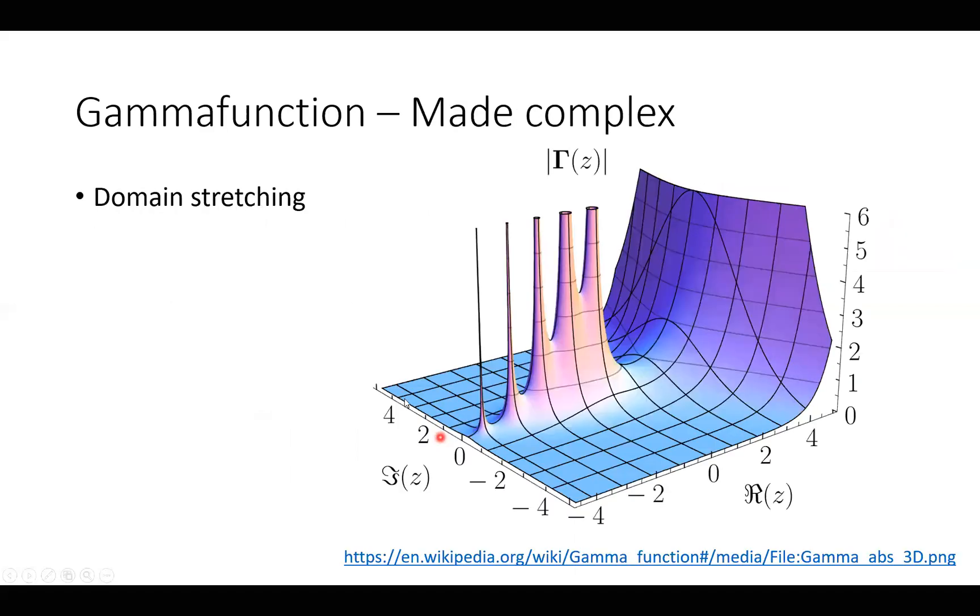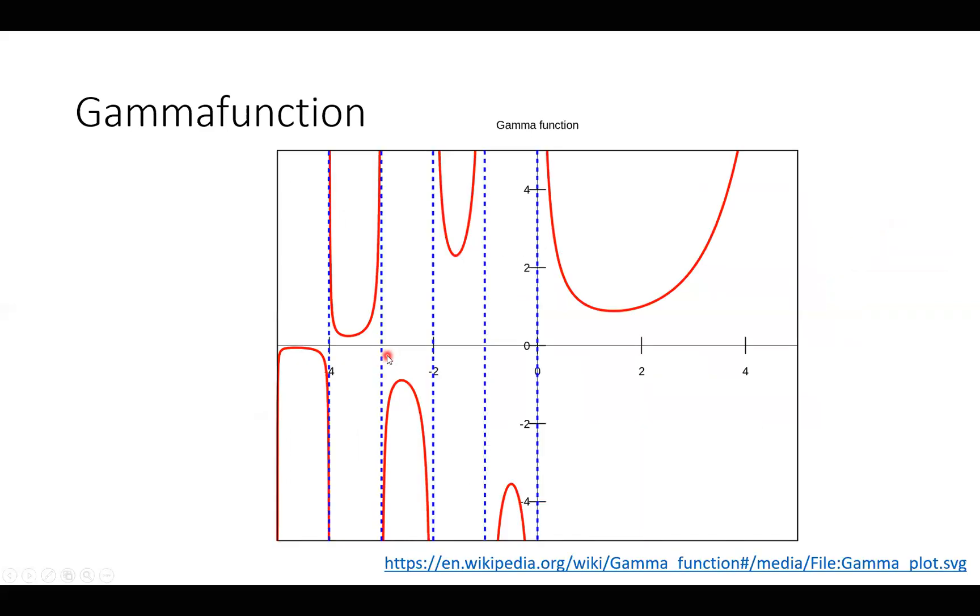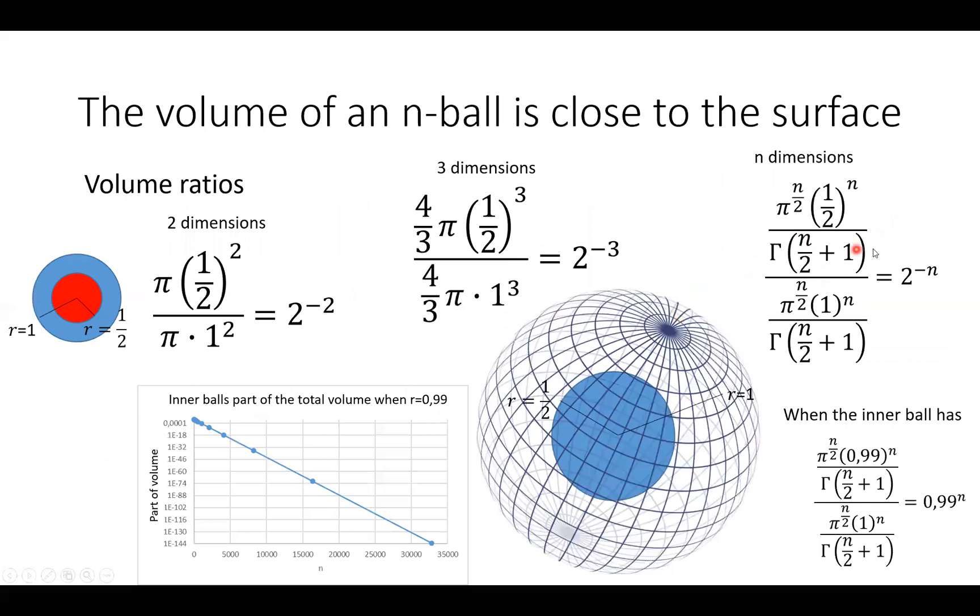We can also stretch this gamma function out in a complex plane. But we will not look into this anymore because we are in fact not using the gamma function because we divide these volumes on each other. So this just disappears anyway.